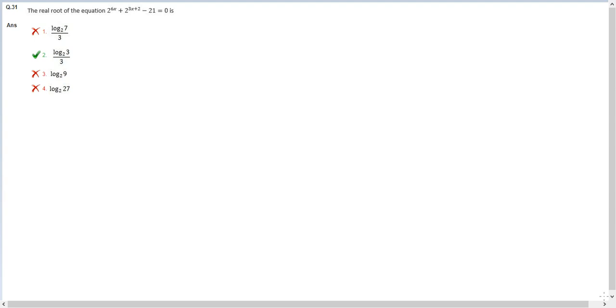Let's look at this question. The real root of the equation 2 raised to the power 6x plus 2 raised to the power 3x plus 2 minus 21 is equal to 0.